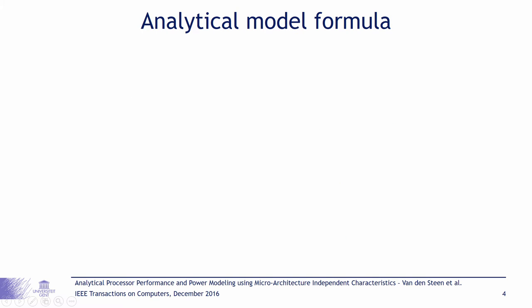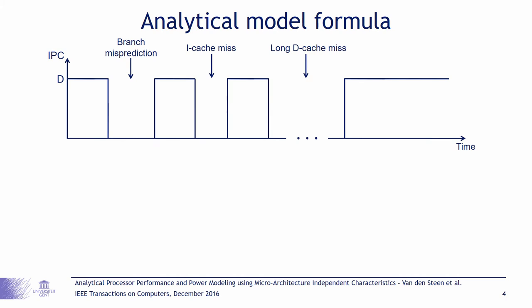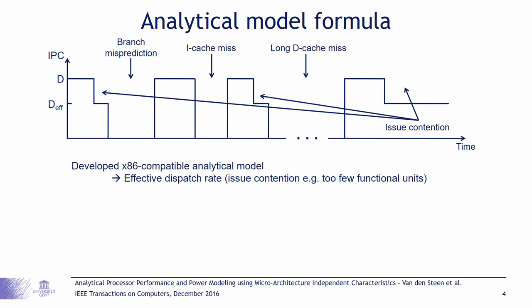What does the analytical model look like? The first order approximation is that when there are no disruptive miss events such as a branch misprediction, an iCache miss or a long data cache miss, the processor can sustain an effective performance or IPC equal to the physical dispatch width. However, we found that this was not the case for x86 based processors. Due to structural hazards in the issue stage of the processor, the performance is throttled. We modeled this as an effective dispatch rate which is lower than the physical dispatch width.